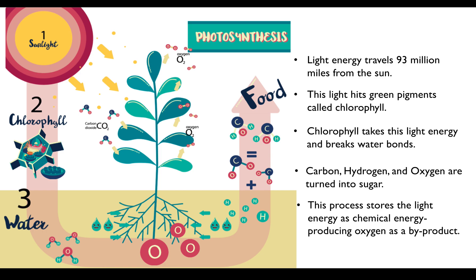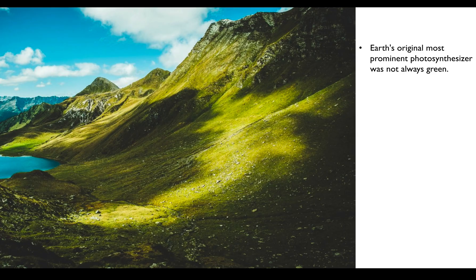That process is called oxygenic photosynthesis, which is what I'm going to mostly focus on and how it evolved on this planet. On this planet, we did not always have oxygenic photosynthesizers.